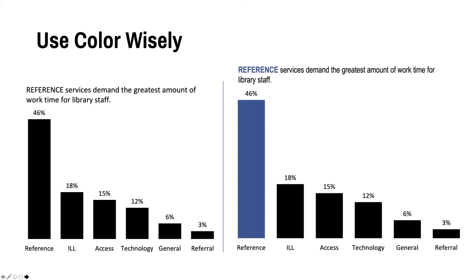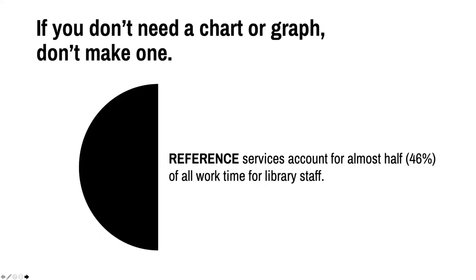But what if that's all I really want to say from this data? I just want to show that we pretty much devote half of all library staff time to reference services. Do I need to show this in context to the other services? Does it matter how much time is devoted to them? Well, it depends of course on what you really want to say with the data. And if you don't need a chart or graph to tell your story, don't make one — skip it. Save your time for something better. All I want to show to my audience is that this one service, library reference, takes up almost half of everyone's work time. I can make my visual as simple as a half circle. It doesn't mean anything in the sense of a pie chart, but it's clearly representative of a half and it couples well with the message. No chart needed here.